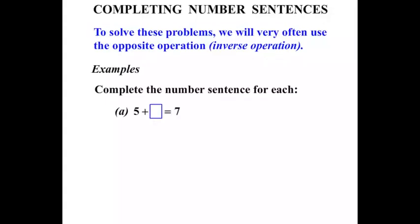The first one is a real tough one. 5 plus something equals 7. Now I know that you know the answer is 2, but let's see how this inverse operation idea works. We start with our answer which is 7.